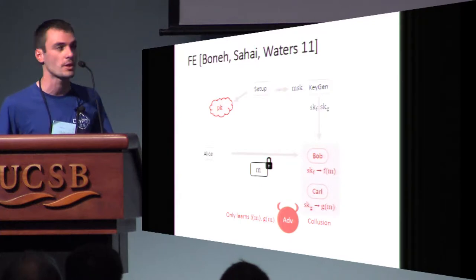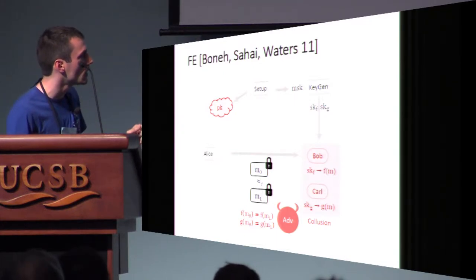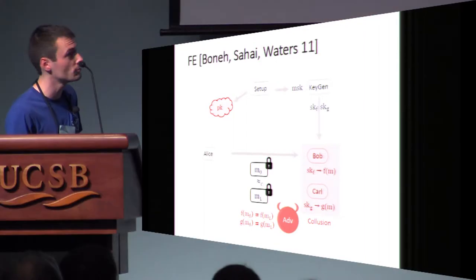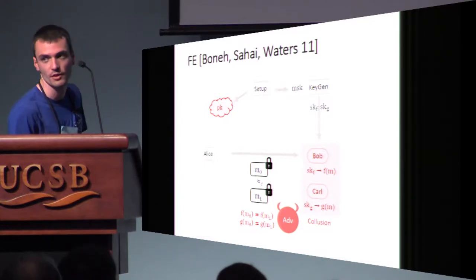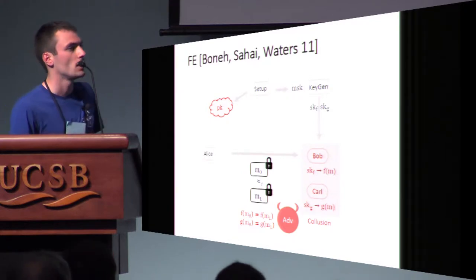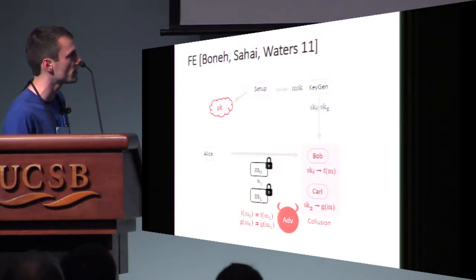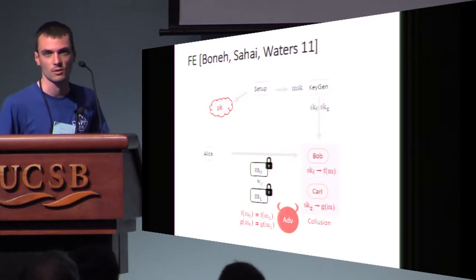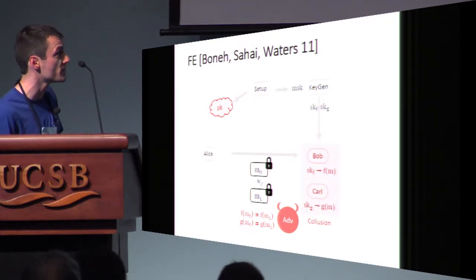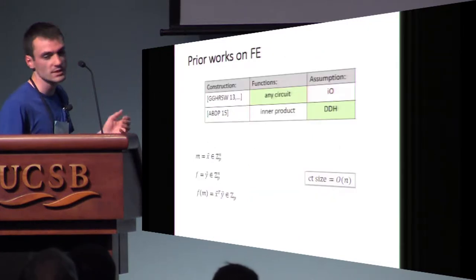The adversary cannot combine keys to get extra information. Formally, this is captured by indistinguishability-based security, where the adversary chooses some pair of messages M0 and M1. As long as the adversary only gets secret keys that do not distinguish between these two messages, the adversary will be unable, computationally, to distinguish between the encryption of M0 from an encryption of M1. Usually the adversary can do everything adaptively — getting a public key then choosing M0 and M1. But you can also consider a restricted class of adversaries called selective, because they choose M0 and M1 before seeing the public key. This is a weaker notion of adaptive security.